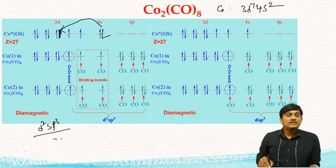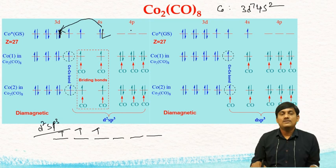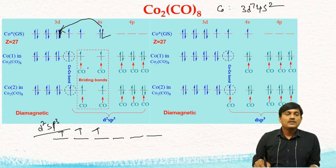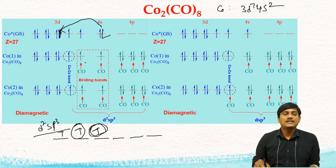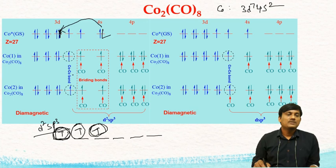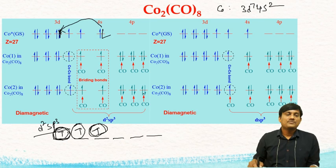This gives 6 d²sp³ hybridized orbitals. The first three have unpaired electrons and the next three are empty. The 3 empty orbitals are filled by 3 terminal CO ligands. Two of the d²sp³ orbitals with unpaired electrons are filled by 2 bridged CO ligands, each donating 1 electron. The remaining unpaired orbital is paired via the cobalt-cobalt metal bond. Since all electrons are paired, the compound is diamagnetic.